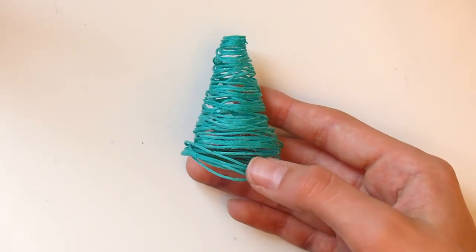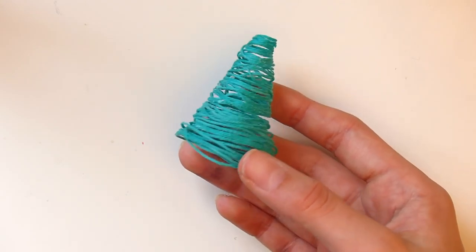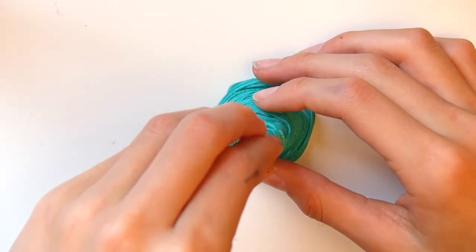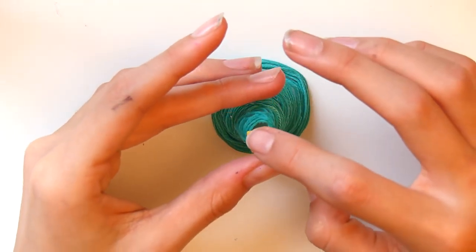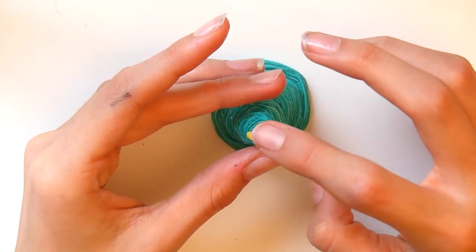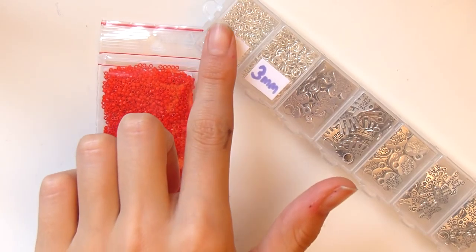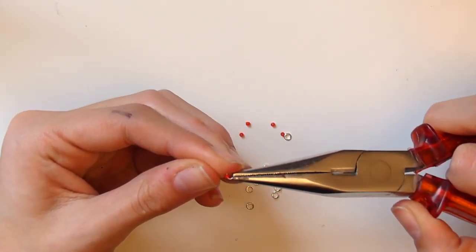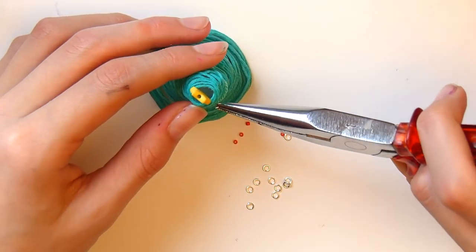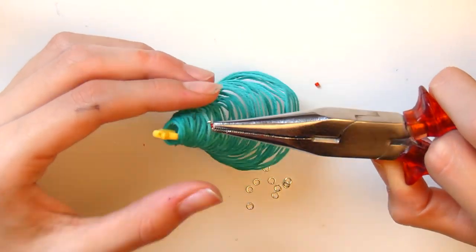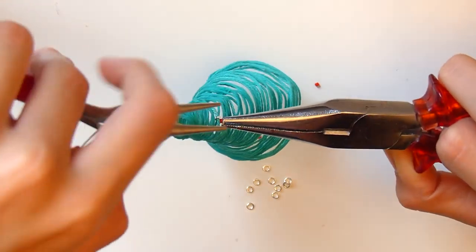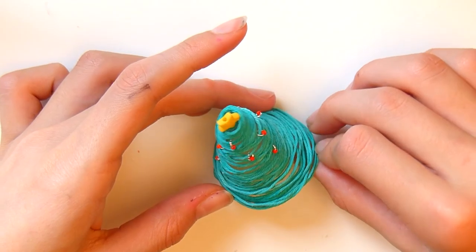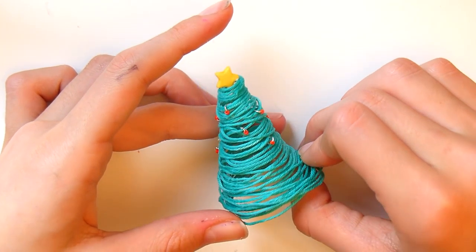Je viens ensuite le décoller délicatement. Pour la déco j'ai pris une petite perle en forme d'étoile et je la colle sur le sapin. Avec des anneaux tout petits et des perles Miyuki, je vais faire une imitation de boule de Noël. Je passe une petite perle dans un des anneaux, puis je passe l'anneau à un des fils du sapin. Ça fait une imitation boule de Noël trop mignonne. Vous en mettez autant que vous voulez et voilà le DIY est terminé.